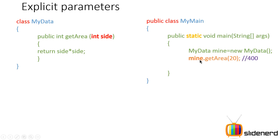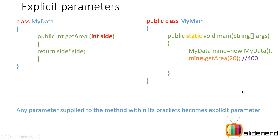In the main method, you create an object of MyData by saying 'MyData mine = new MyData'. Here, 'mine' is a reference to an object of type MyData. When you say 'mine.getArea(20)', this 20 goes into the 'side' variable, you calculate side times side which is 400, and that's exactly what gets returned. This is an explicit parameter — when a method specifies parameters inside the parentheses, those are explicit parameters.